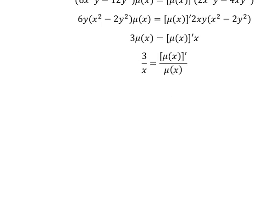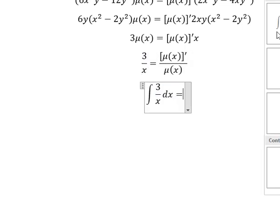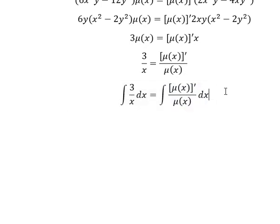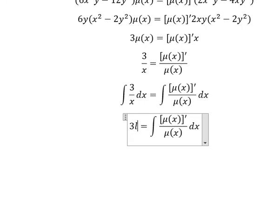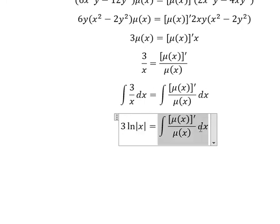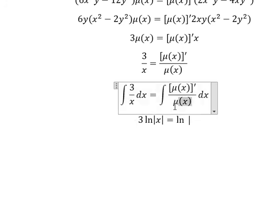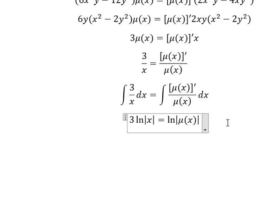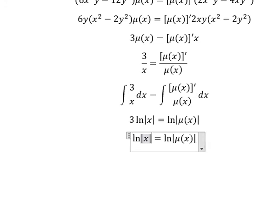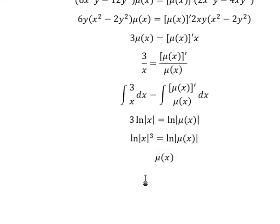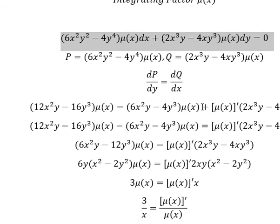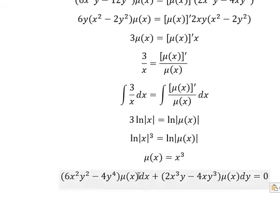We have 3 over x squared and μ(x squared) on this side. Next we integrate both sides. The integration of this gives 3 ln of the absolute value of x. The integration of the other side gives ln of the absolute value of μ(x). We bring the 3 inside the natural log, and that means μ(x) equals x to the power of 3.